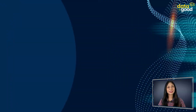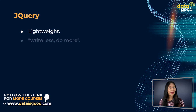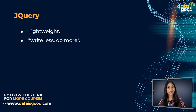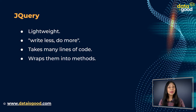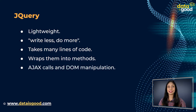So what is jQuery? jQuery is a lightweight, write less do more JavaScript library. The purpose of jQuery is to make it much easier to use JavaScript on your website. jQuery takes a lot of common tasks that require many lines of JavaScript code and wraps them into methods that you can call with a single line of code. jQuery also simplifies a lot of the complicated things from JavaScript, like AJAX calls and DOM manipulation.